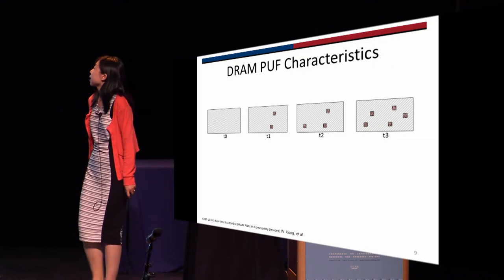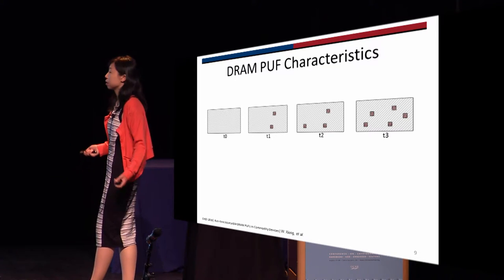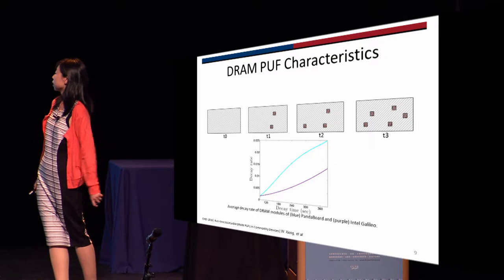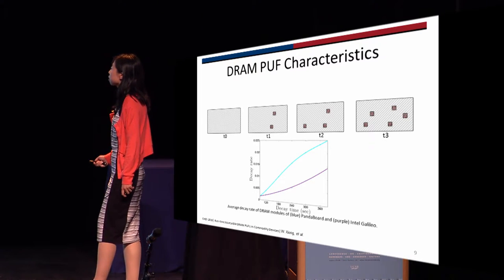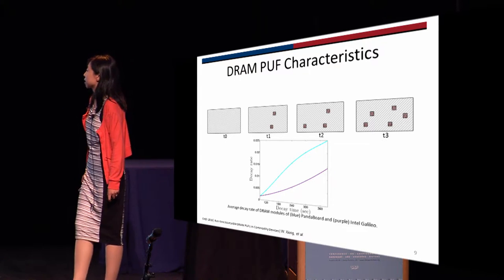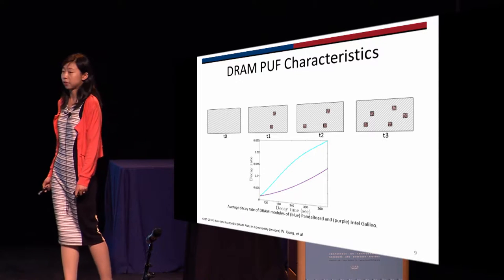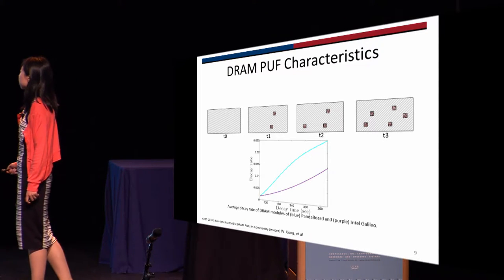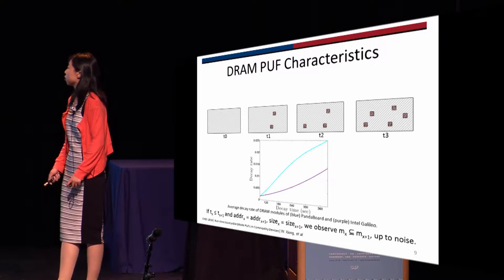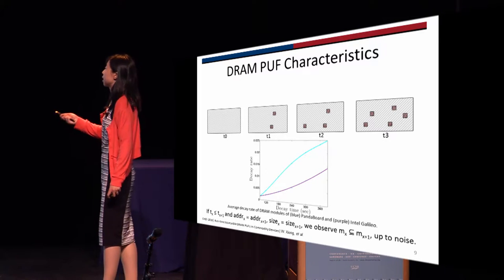This is the DRAM decay process. In the beginning, it is initialized. Over time some bits flip; over time more bits start to flip. In our data, this figure shows the decay rate. The x-axis is the decay time of the DRAM measurement, and the y-axis is the average decay rate for the PandaBoard and Galileo. We can see different devices have different decay properties, and the PandaBoard always decays faster than Intel Galileo. We also find that bits that flip at shorter decay times will always flip at longer decay times as well.